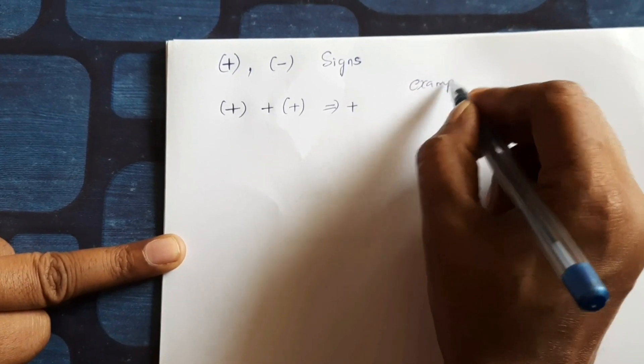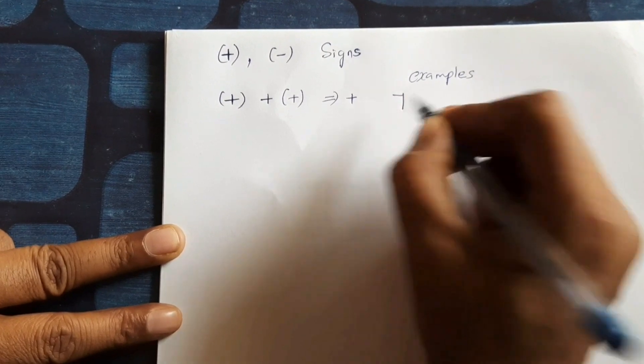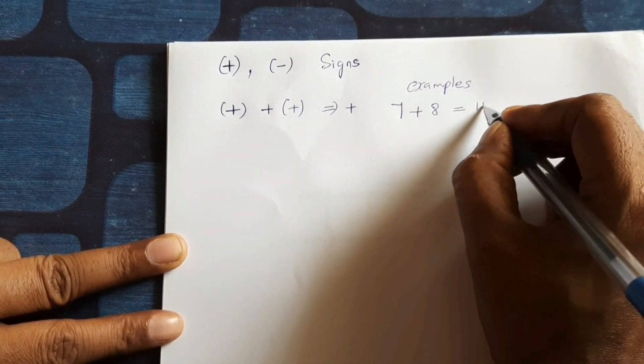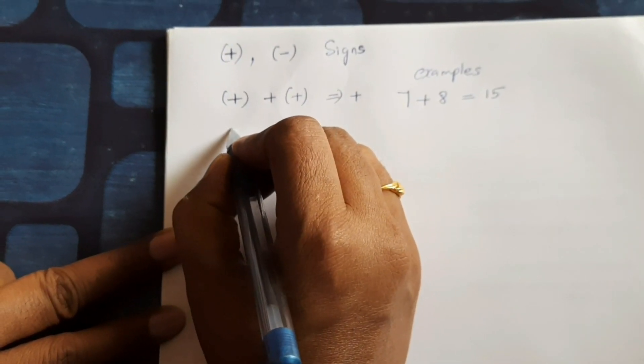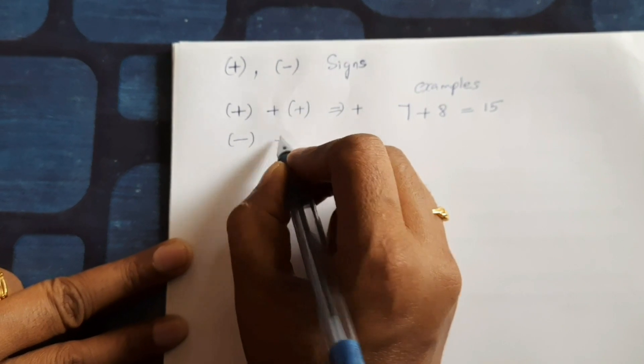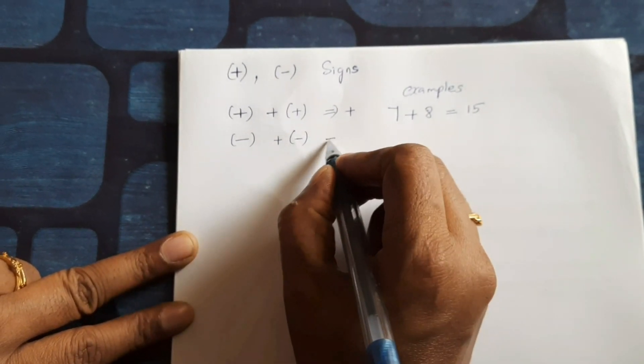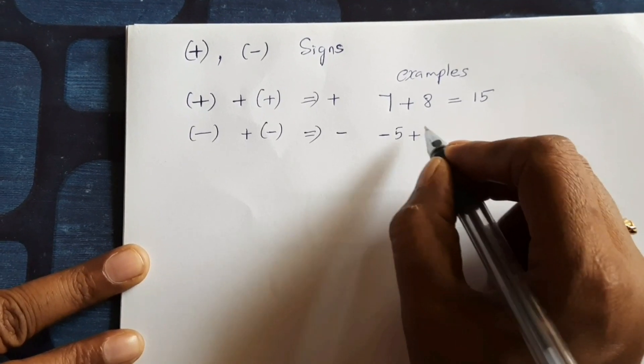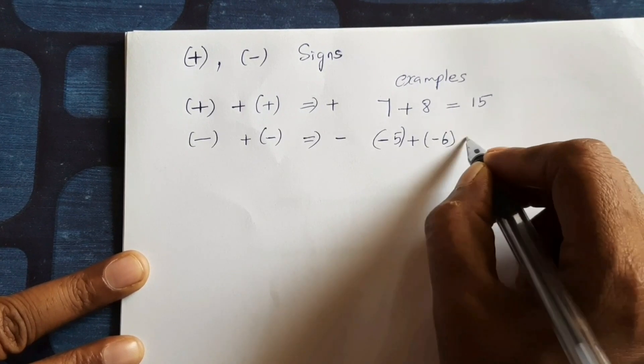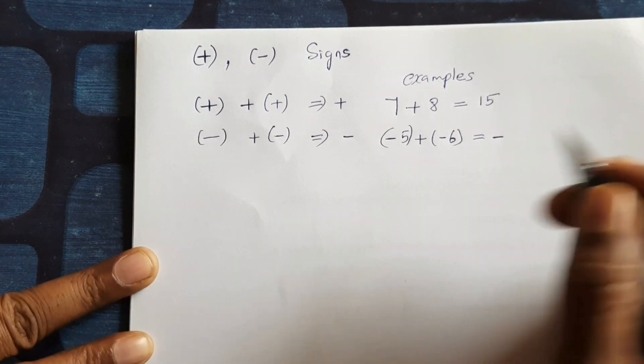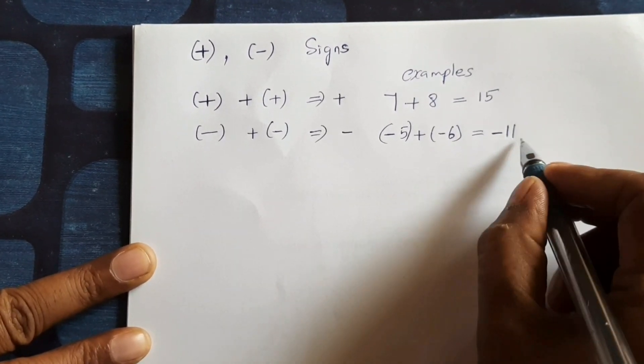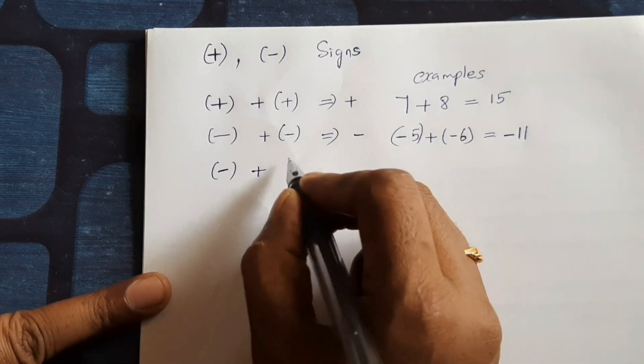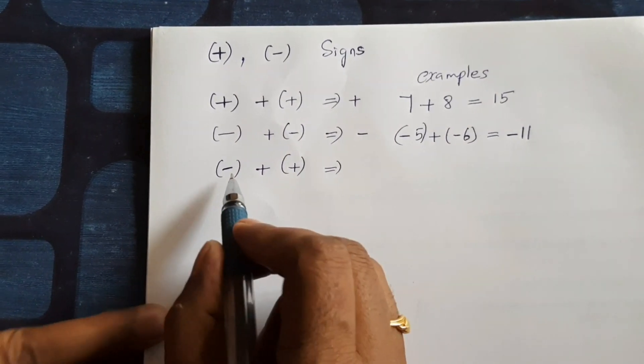Example: 7 plus 8 equal to plus 15. Next minus plus minus gives minus. Here minus 5 plus minus 6 gives minus 11. So negative 11 not plus 11.